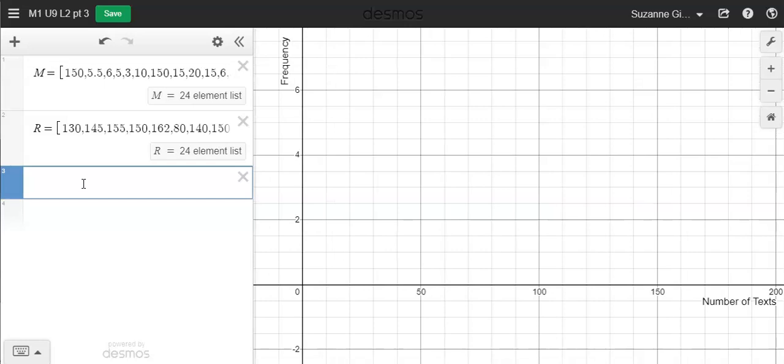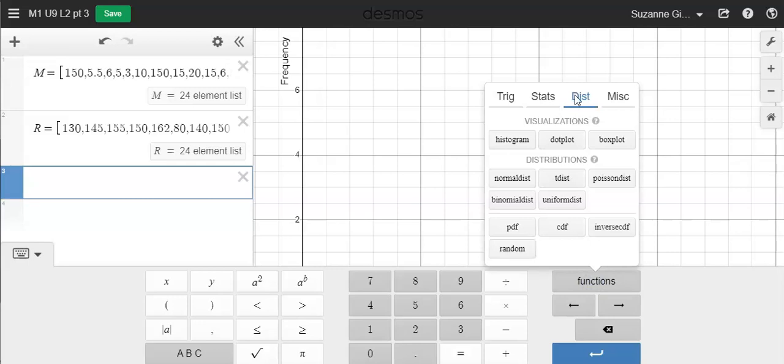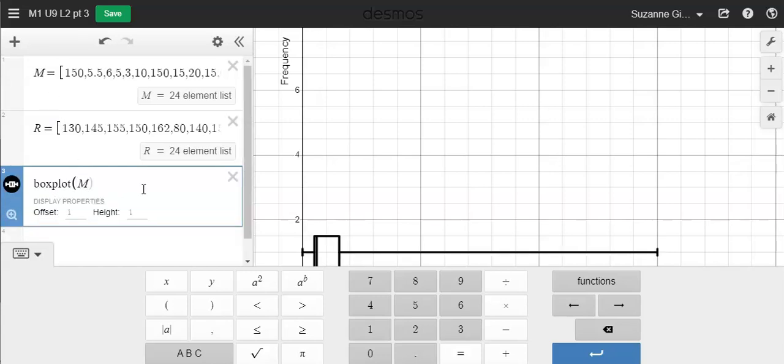So let's create some data representations. I'm going to create box plots and histograms. To create a box plot, you can show the keypad here, then go to Functions, and then under Distribution, select this distribution. This is where you have your different ways of representing one variable data. With the box plot, I'll click on Box Plot, and then I want to graph the mom's data first. So I'll just put an M, and there's my box plot.